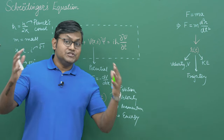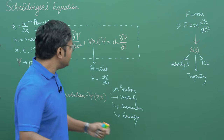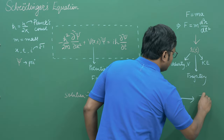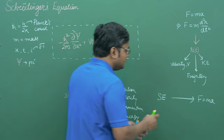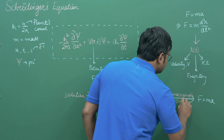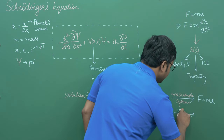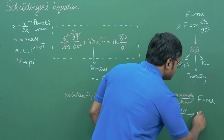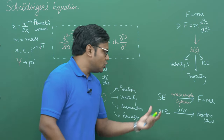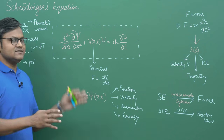Quantum mechanical theory is supposed to be a more general theory — not just explaining microscopic particles, but everything. The Schrödinger's equation should give us Newton's second law under the limit of macroscopic systems, in the same way that special relativity, under the limit of v much less than the speed of light, gives us Newton's laws. So Newton's laws are a special case of a more general quantum mechanical theory of which the Schrödinger's equation is the fundamental equation.